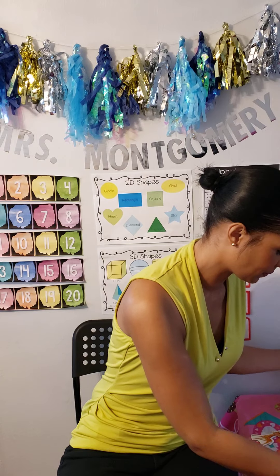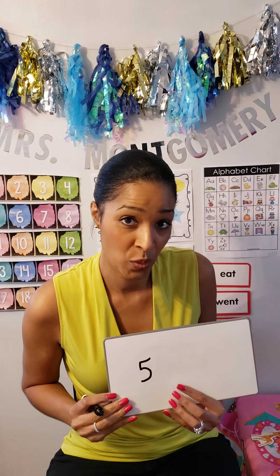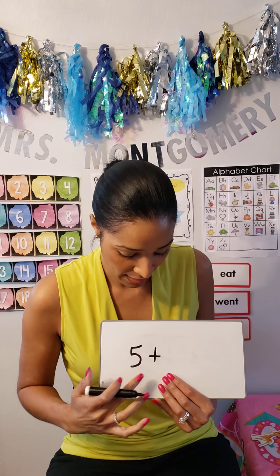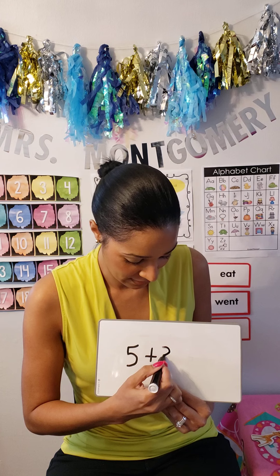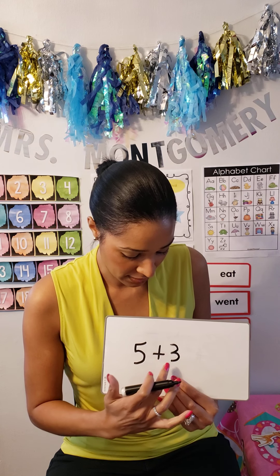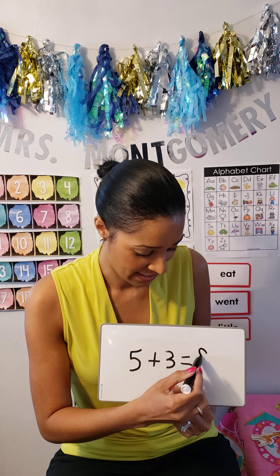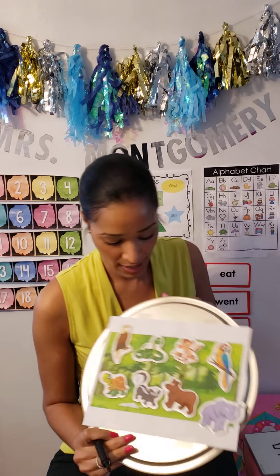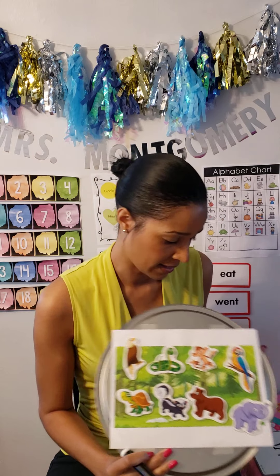Let's do an equation. We started with five. Did we get more? We did, so we're going to put a plus sign. Five plus how many came? Three more. So five plus three equals eight. We can go back and check: one, two, three, four, five, six, seven, eight. Good job.